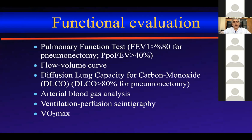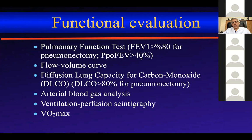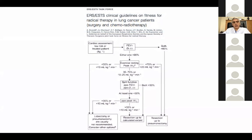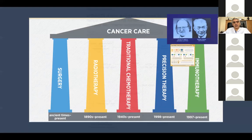There are many functional evaluation methods. You should know that pulmonary function test is important: FEV1 should be higher than 80%, or post-operative predicted FEV1 should be higher than 40%. There are other parameters you don't need to memorize: diffusion lung capacity, arterial blood gas analysis, ventilation-perfusion scintigraphy, VO2 max in patients with limited lung function, and cardiac evaluation.